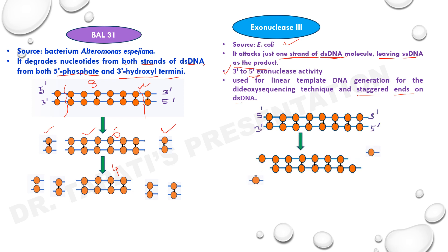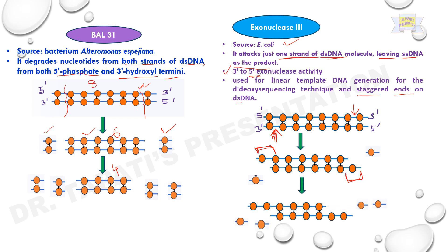If you see this figure, due to the action of Exonuclease III, two staggered ends are produced because this enzyme acts from the 3' end. This is one cutting position and this is another cutting position — therefore you get this type of overhang at the 5' end of the DNA. In the next step, you can find that single nucleotide degradation is happening and the cohesive or staggered end length is increased.